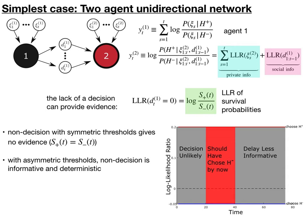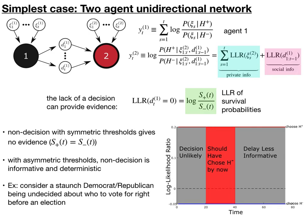With asymmetric thresholds, what we found is that early on, if an agent is biased to really require less information for, let's say, the minus decision than for the plus decision, early on, no decision gives no evidence. But at an intermediate time, this provides evidence that they should have chosen H minus now. So if they haven't made a choice yet, it points that they've received evidence in favor of the H plus choice. But as time goes on, this delay becomes less informative because they really should have made either an H plus or H minus choice at that point.